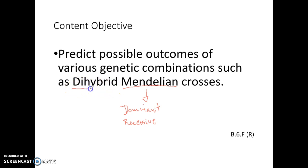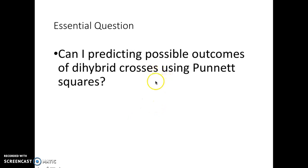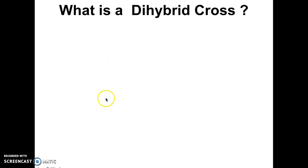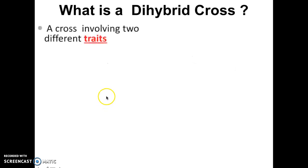But in today's video we're going to learn about dihybrid crosses, which is a little bit different. The essential question is going to be: can I predict possible outcomes of dihybrid crosses using Punnett squares? We're going to learn how to use Punnett squares to predict possible outcomes of dihybrid crosses, and I'm going to learn what dihybrid means in today's video as well. So what is a dihybrid cross? Let's just run right into it. A dihybrid cross is a cross that involves two different traits.